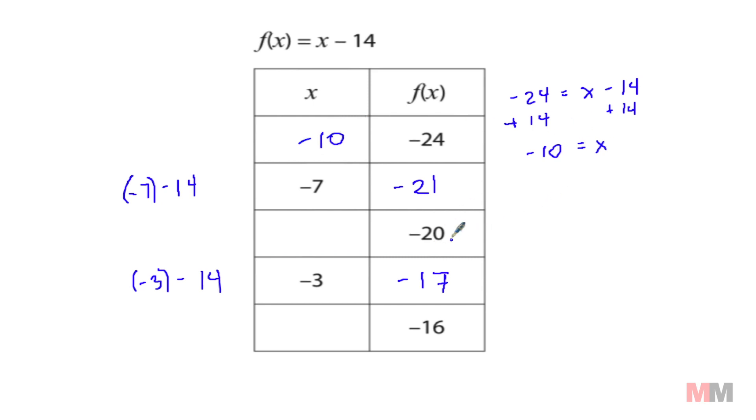Let's do this one now. You got your output as negative 20 equals the main function itself, x minus 14. Add 14 to both sides, and you got x by itself. Negative 6 equals x.